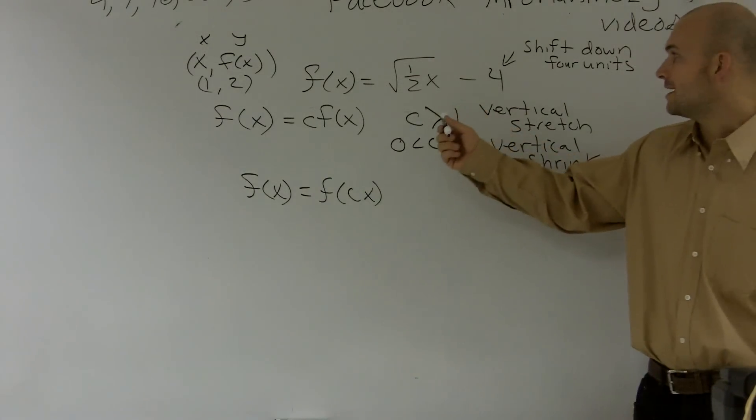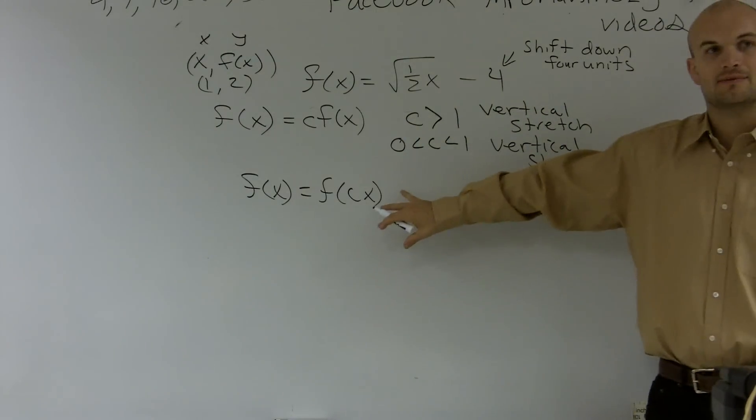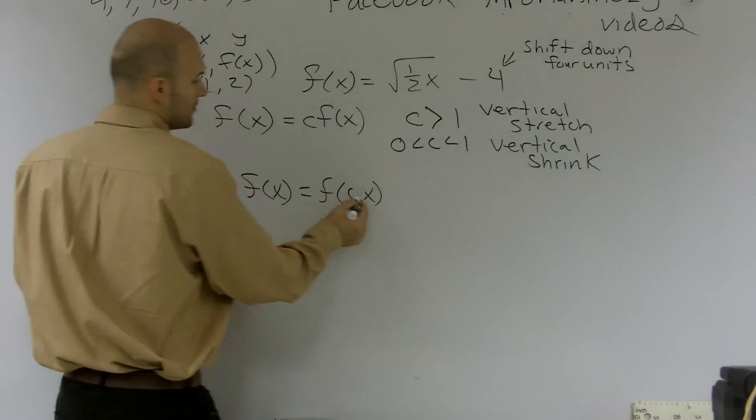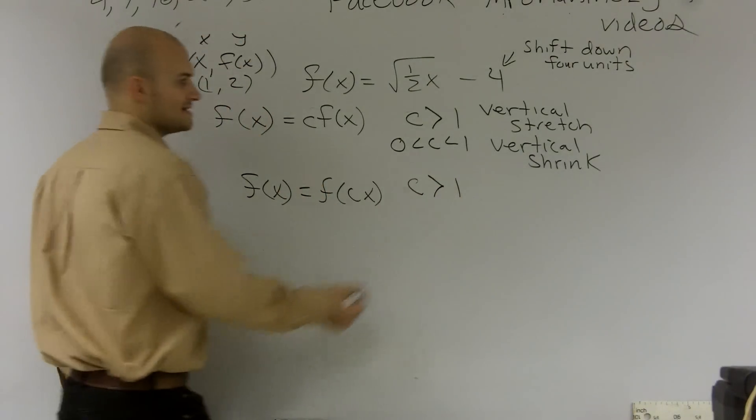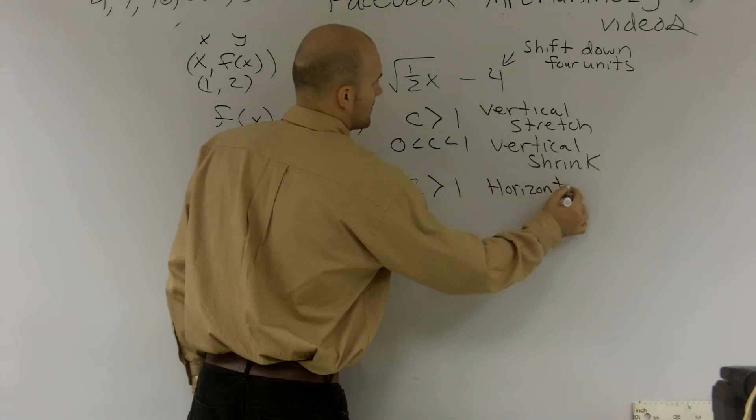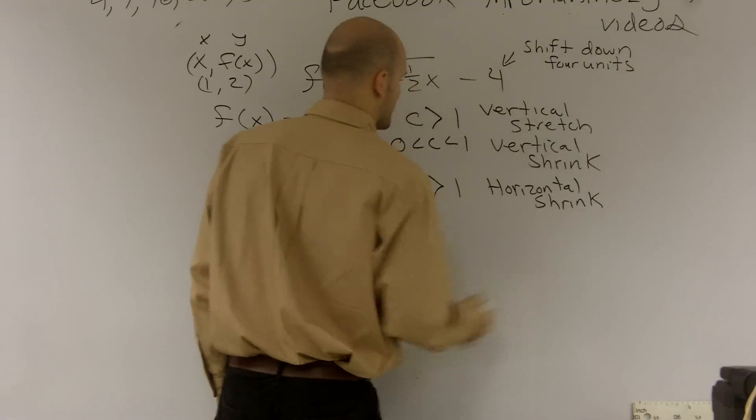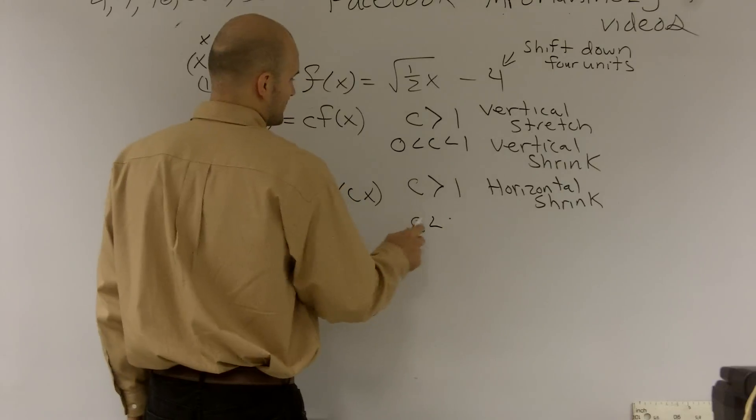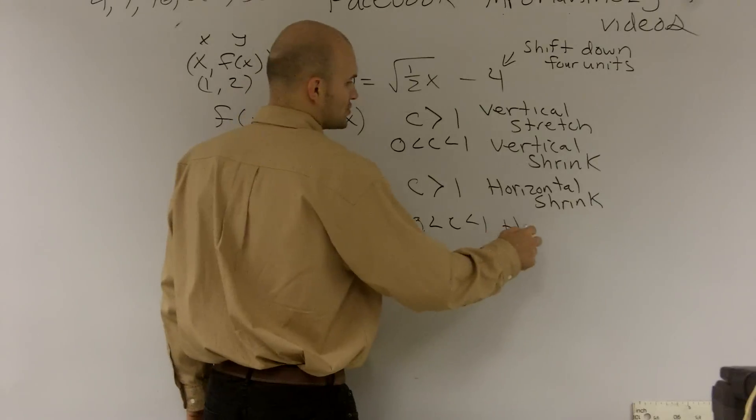And kind of like how we did when you did your horizontal shifts left and right, this is going to be the opposite as well. So when I'm looking at this, if c is greater than 1, that's actually going to be a horizontal shrink. And if c is greater than 0 but less than 1, that's going to be a horizontal stretch.